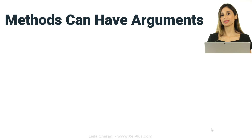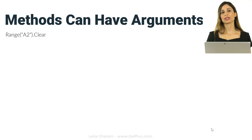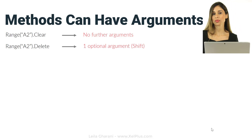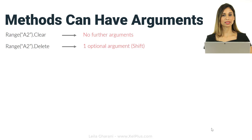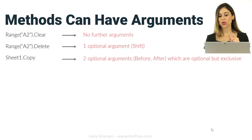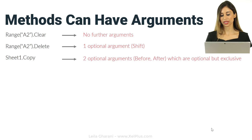These are already predefined. The clear method on the range object doesn't have any arguments — you just say .clear and that's it. The delete method has one optional argument: how do you want to shift the cells — up or to the left? The copy method for a sheet has two optional arguments: you can copy before a sheet or after a sheet. These arguments are optional but exclusive, so you can't mention both or you'll get an error.